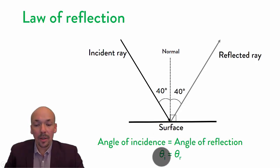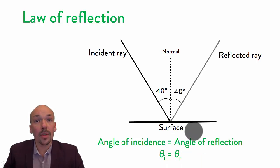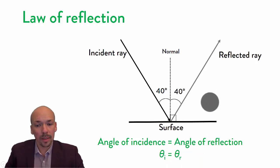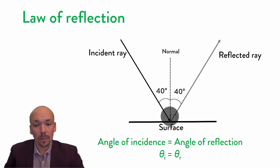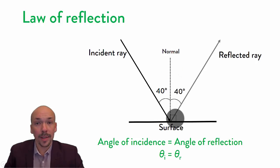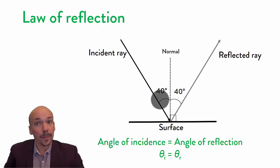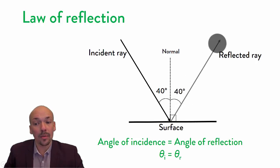In short, the angle of incidence equals the angle of reflection — that's the law of reflection. So for every incident ray, you first have to draw the normal, which is perpendicular at 90 degrees to the surface. Then you measure the angle on the incident side, apply the same angle on the other side, and then you can draw the reflected ray.